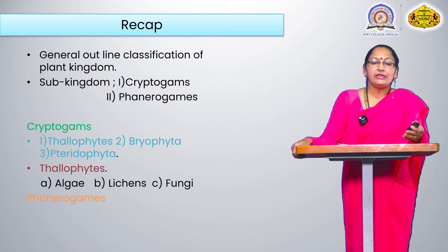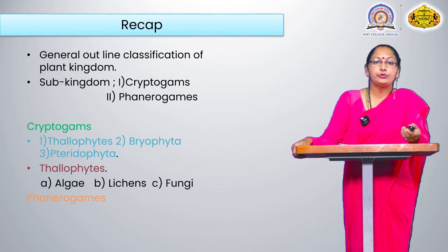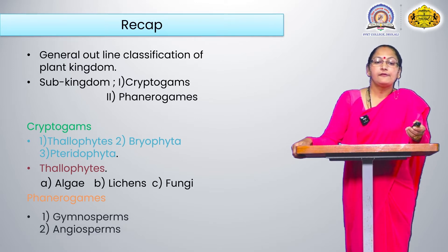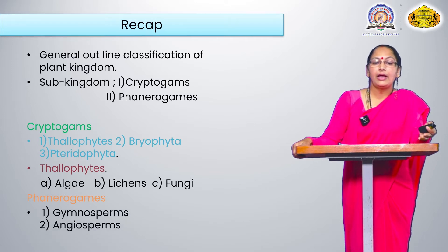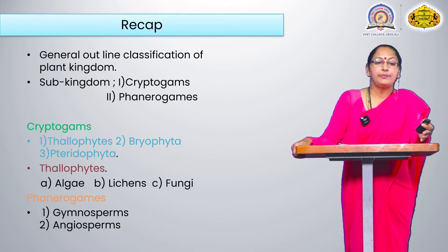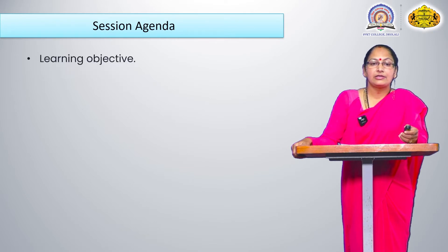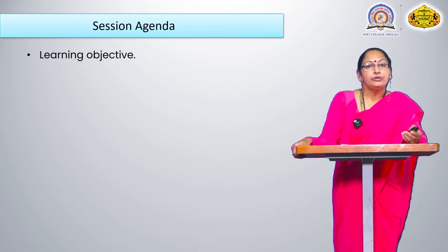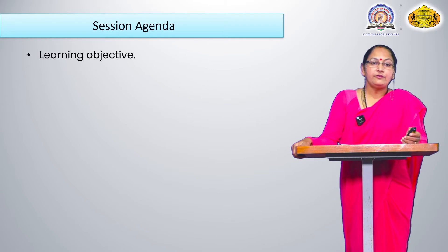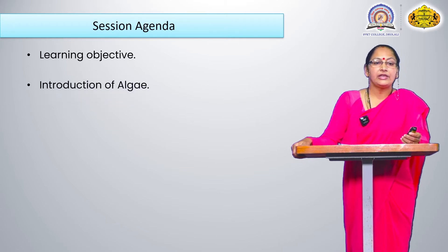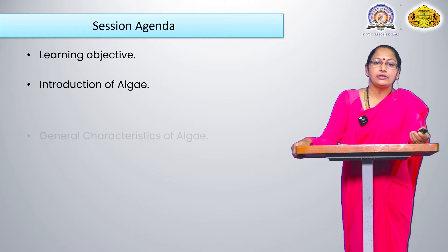In phanerogames, they are also divided into two classes: gymnosperms and angiosperms. Both are flowering plants. These all topics were covered in the last lecture. Today we take them one by one, starting with the learning objectives and introduction of algae.